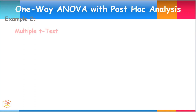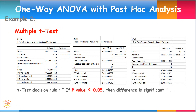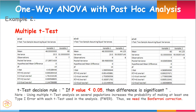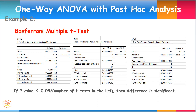Here is the result of the multiple independent t-test using the Analysis ToolPak. The t-test decision rule is: if the P value is less than 0.05, then the difference is significant. But using multiple t-test analysis on several populations increases the probability of making at least one Type I error with each t-test used in the analysis. Thus, we need the Bonferroni correction. The Bonferroni correction says: if any of the t-tests in the list has a P value less than 0.05 divided by the number of t-tests in the list, then the difference is significant.